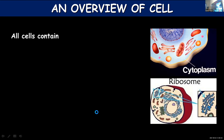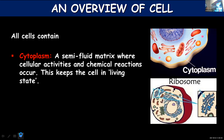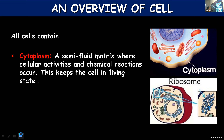All cells contain cytoplasm. Cytoplasm is a semi-fluid matrix present between the nucleus and the cell membrane where different cellular activities and chemical reactions take place. It keeps the cell in a living state. The different cell organelles are also scattered in the cytoplasm, and all metabolic reactions take place within it.